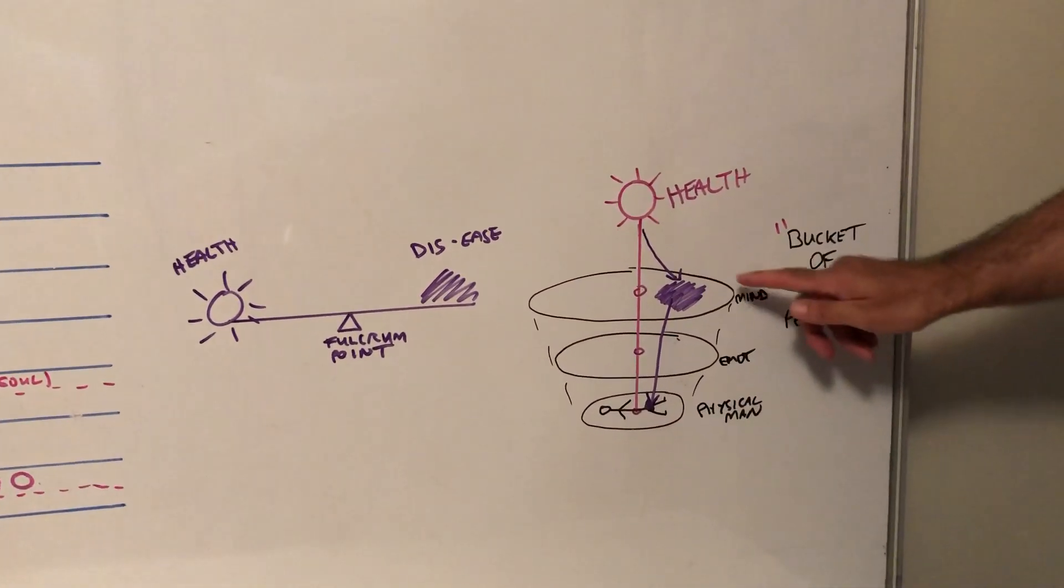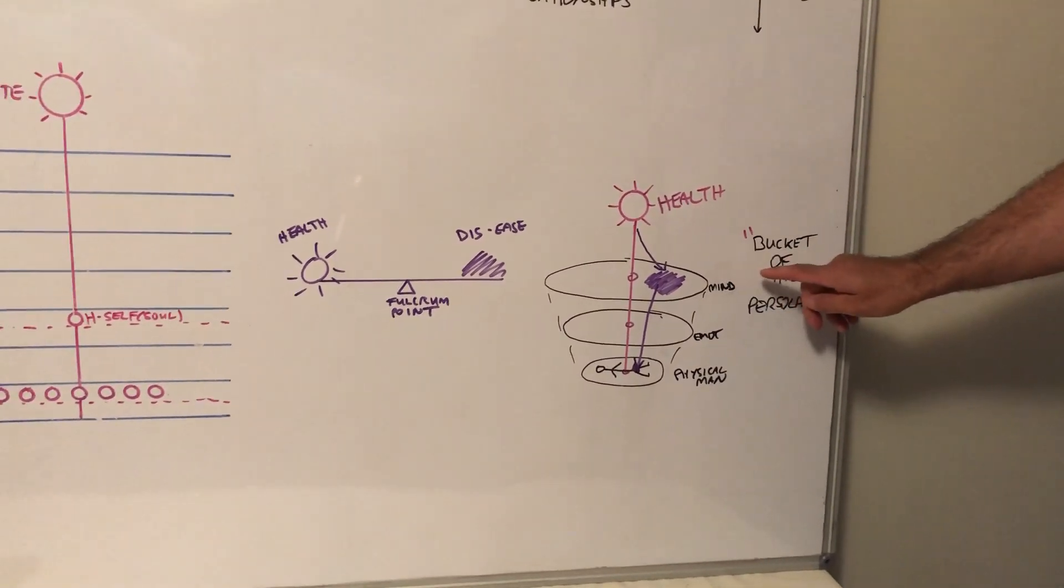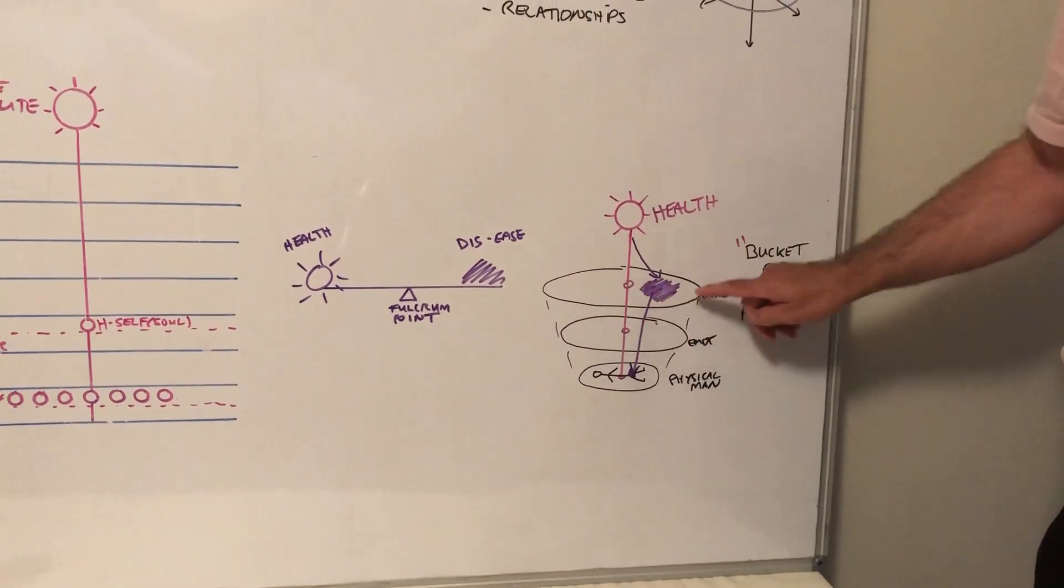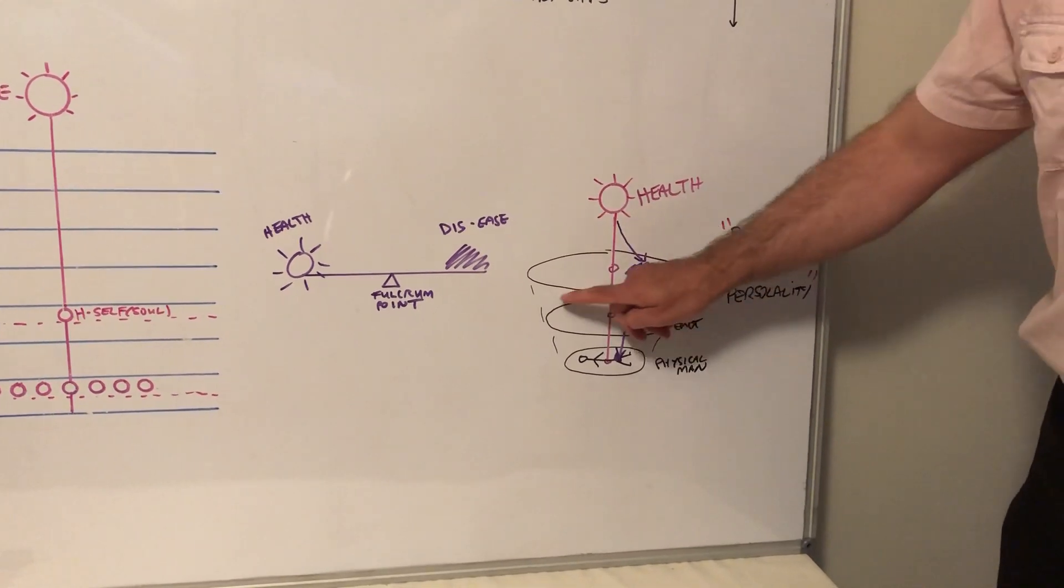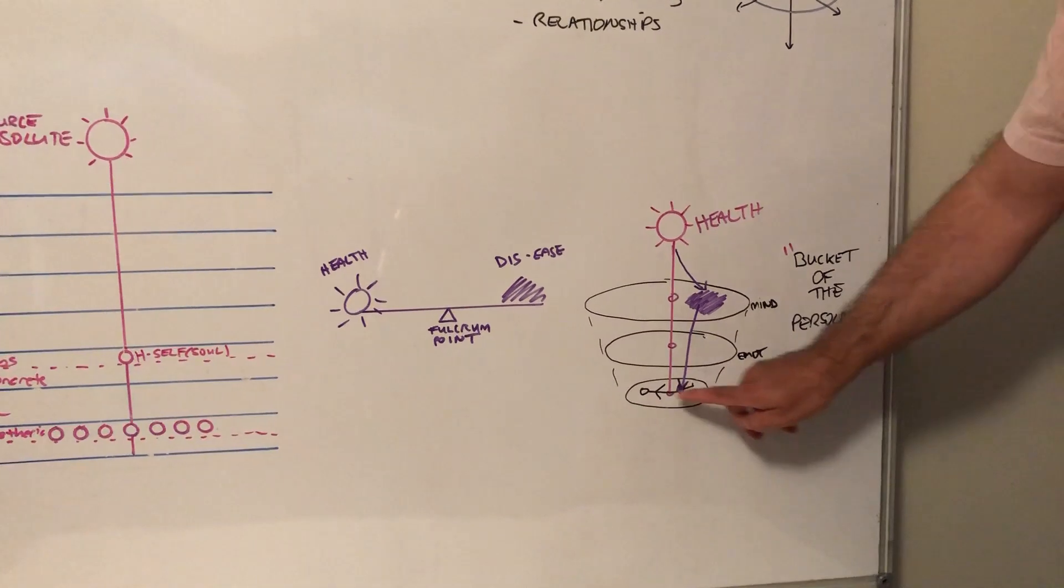Health is manifesting through what I call the bucket of the personality. This represents the mind, this represents the emotions, and this represents our physical body. Here you have physical man.